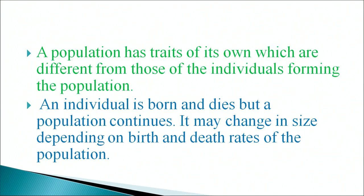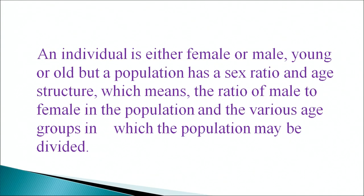All populations of humans living in any part of the world constitute the species Homo sapiens. A population has traits of its own which are different from those of the individuals forming it. An individual is born and dies, but a population continues, and may change in size depending on birth and death rates. An individual is either female or male, young or old, but a population has a sex ratio and age structure.